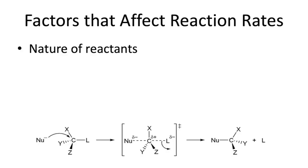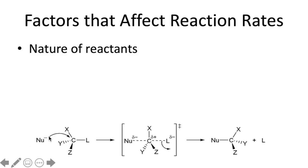There are a few things that will affect reaction rates. One is the nature of the reactants. Looking at this SN2 reaction — which you'll learn about in organic chemistry — orientation is really important. The nucleophile has to attack in between the three legs of the tetrahedral carbon, and then the leaving group can leave from the other side. If X, Y, and Z happen to be really large, it's harder for the nucleophile to attack this carbon, so this reaction would be really slow.